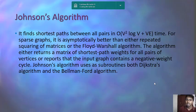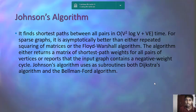For sparse graphs Johnson's algorithm is essentially better than either repeated squaring of matrices or the Floyd-Warshall algorithm. The algorithm returns a matrix of shortest path weights for all pairs of vertices, or reports that the graph contains a negative weight cycle. It uses two subroutines: first Bellman-Ford is applied, which changes negative edge values to positive, and then Dijkstra's algorithm is applied to find the shortest path. Thank you — my colleague will continue.